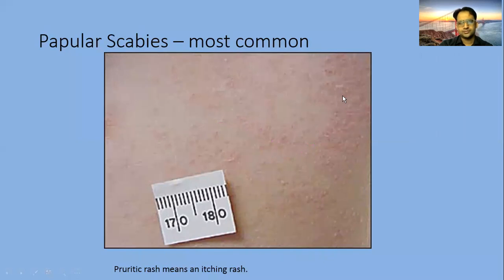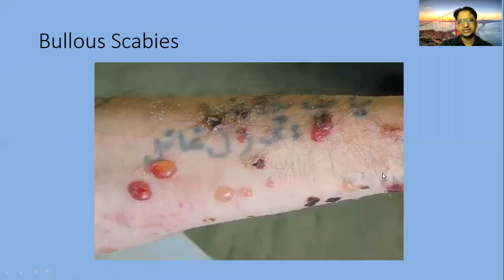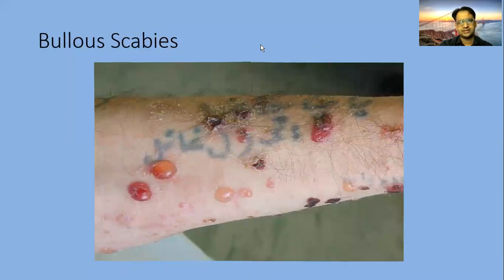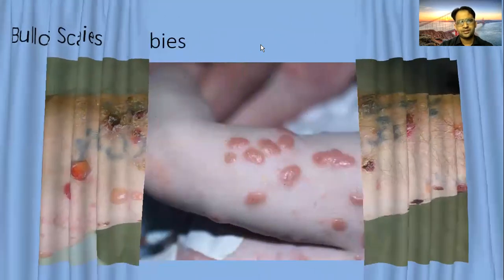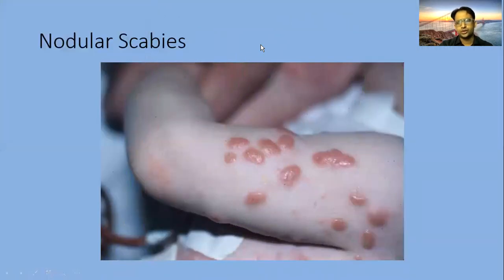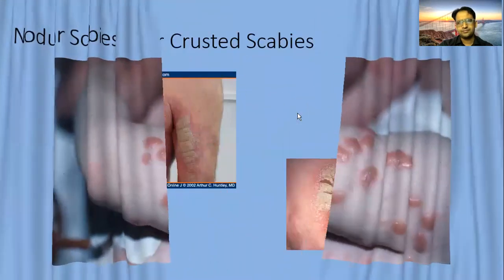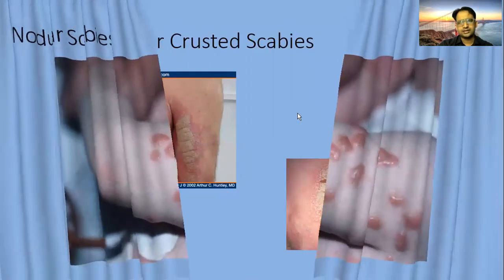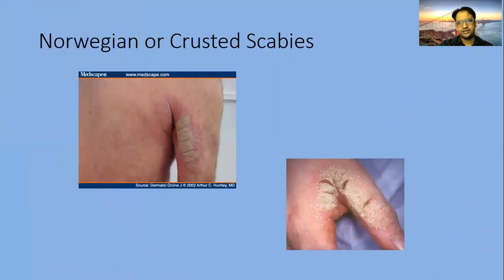The most common problem with scabies is intense itching on the rash, creating a very problematic condition. You can see scabies in its different forms — the bolus form, nodular form showing nodules, and crusted or Norwegian crusted scabies. These different forms are all created by mites.